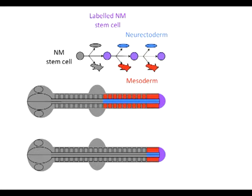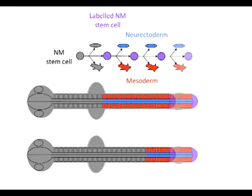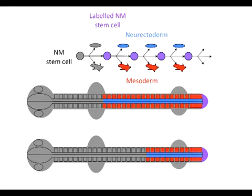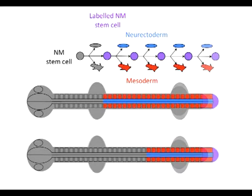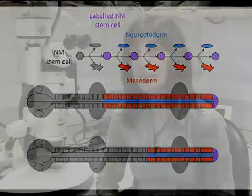The presence of this common neuromesodermal progenitor may represent a developmental strategy that allows the embryo to maintain a balance in the relative amounts of neural and mesodermal tissues produced, and also coordinate this differentiation process with progenitor self-renewal, which is in turn necessary for the continuation of axial elongation.